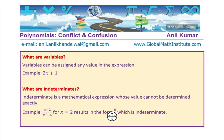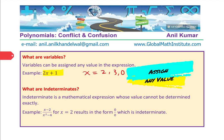Now let us look into what are variables. The conflict is variables have been associated with indeterminates. What are variables? Well, variables can be assigned any value in the expression. For example, if I have the expression as 2x plus 1, you can put x as anywhere. So x could be equal to 2, 3, 0, square root 5, whatever you want. We are just saying x belongs to set of real numbers.